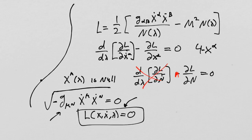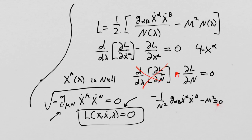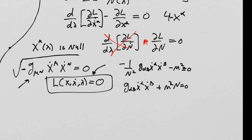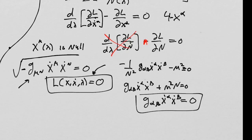What is dL/dN going to be? You get one over n-squared from the first term, minus m-squared equals zero. Then you multiply through by n-squared and get g-alpha-beta x-dot-alpha x-dot-beta, multiply through by negative one, plus m-squared n-squared equals zero. Now you're free to choose this constant m, and if you choose m equal to zero, you end up with the constraint g-alpha-beta x-dot-alpha x-dot-beta equals zero. That constraint is forced upon you by this Lagrangian.